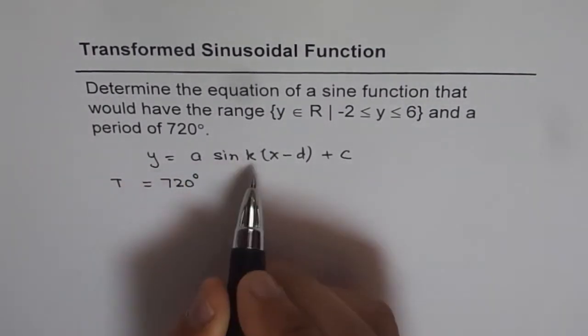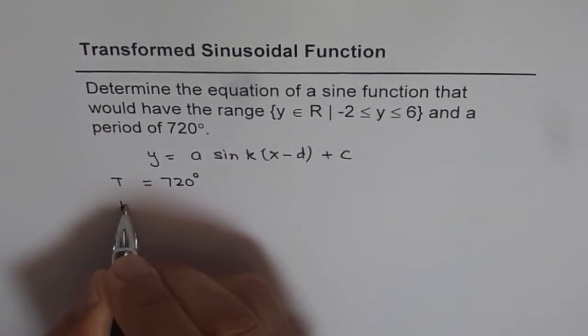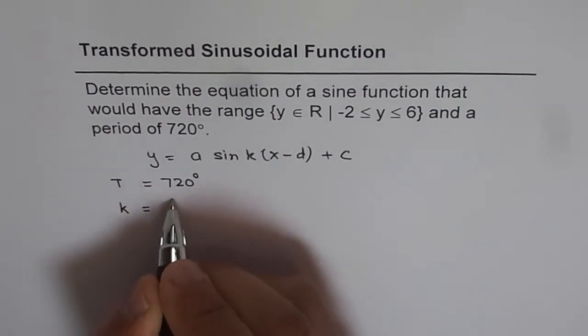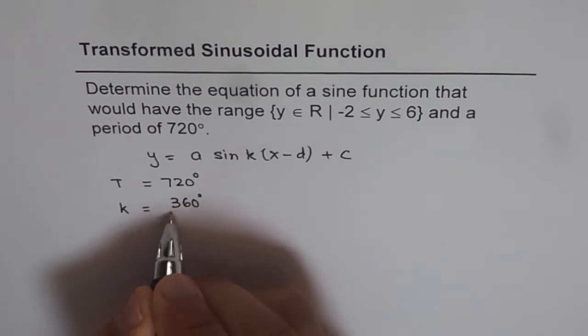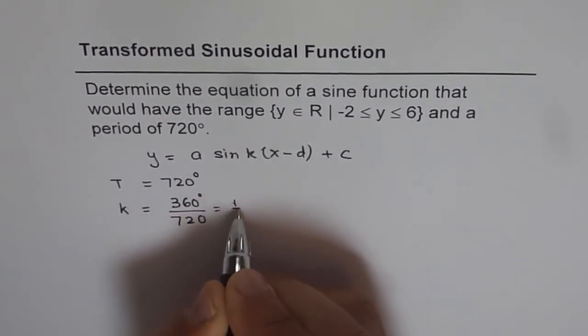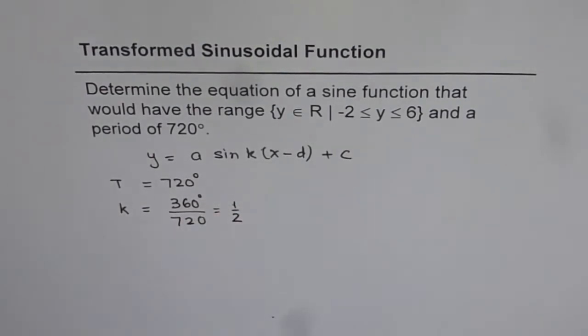Now from here we can find the value of k. k is equal to 360 degrees divided by 720, the time period, and that is half. So the value of k is half in our case.